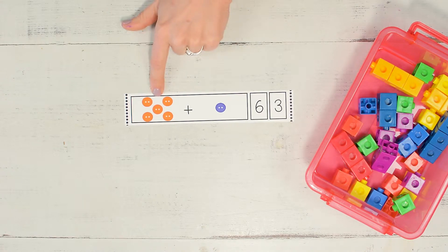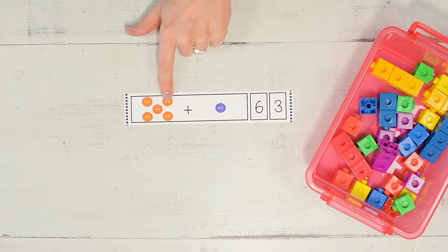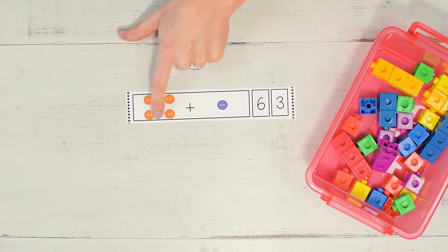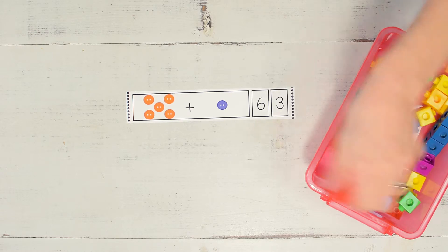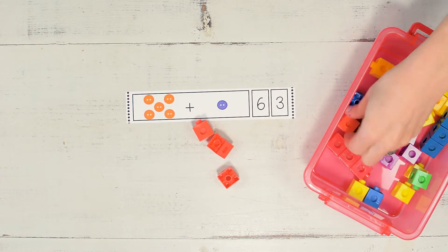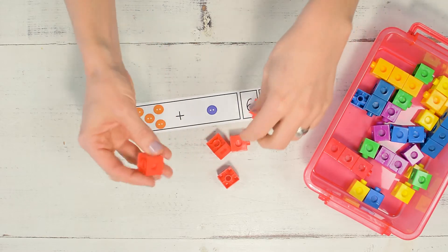So how many buttons do I have here? One, two, three, four, five. So I'm going to, just because I have the right colors, get the orange snap cubes and count out five.